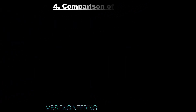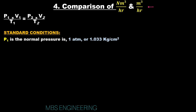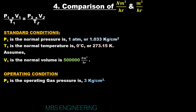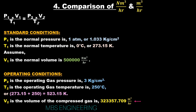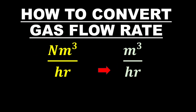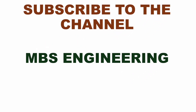Comparing the results: the gas volumetric flow in standard conditions is 500,000 Nm³/hr, while the gas volumetric flow in operating conditions is 323,357.709 m³/hr. When operating conditions change — including pressure and temperature — the obtained volumetric flow also changes. Thank you for watching. Don't forget to subscribe to the channel for more informative videos, and please like and leave a comment.